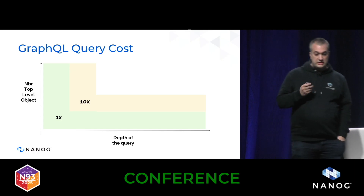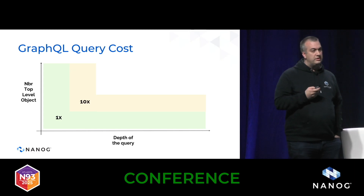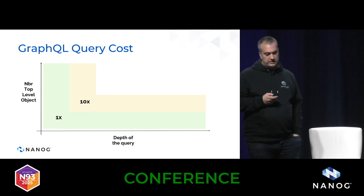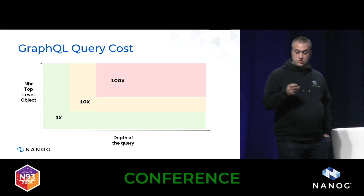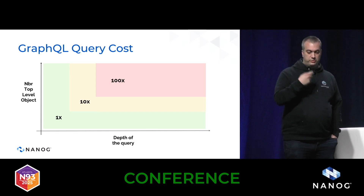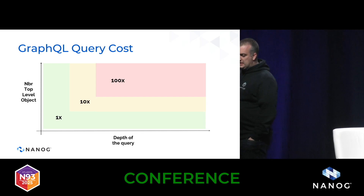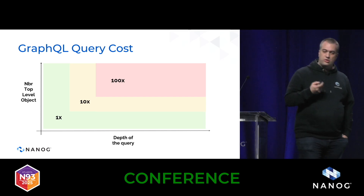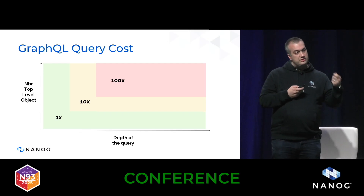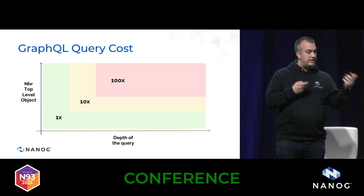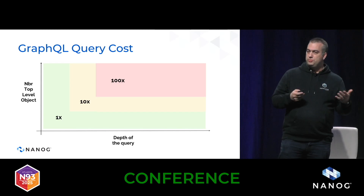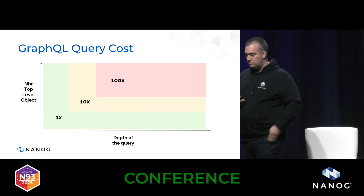With great power comes great responsibility — make sure never to run a query that requests all objects with a really large depth. This is also why GraphQL interfaces are usually not exposed to the internet: if you don't trust the clients making those queries, it can lead to denial of service. It's much more popular for internal use inside companies.